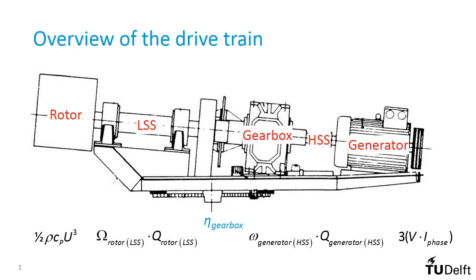To address the overall behavior of the drivetrain, we'll go back to the overview that was provided at the beginning. We have seen how aerodynamic power is converted by the rotor and transmitted as mechanical power through the low-speed shaft, the gearbox, and the high-speed shaft to the generator, where it is converted into electrical power.